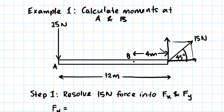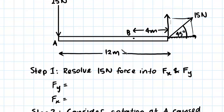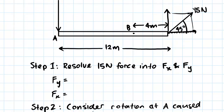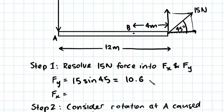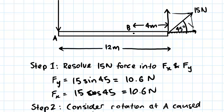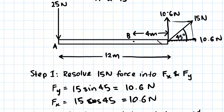We want to solve for Fy, as we've seen in the previous topic on vectors. The way we break this down is simply Fy equals 15 Newtons sine 45, which works out to 10.6 Newtons, and Fx is 15 cos 45, which is also 10.6 Newtons. We can now write in these forces: 10.6 Newtons vertically and 10.6 Newtons horizontally. We're not going to be interested in the horizontal force because it doesn't cause any moment in the beam — it doesn't rotate it.